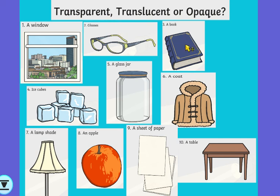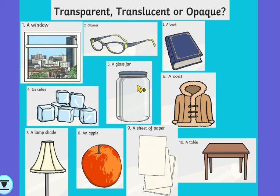A book — would I be able to see any light if I passed a torch the other side? No, I wouldn't, so that means a book is opaque. Ice cubes — now think about a frozen ice cube. Would the light pass through it straight with no problems, or would it get separated off and not be as bright? That means ice cubes are translucent. A glass jar — well, as long as it's empty it is transparent. If there was jam in it, it would become translucent because the jam would stop us seeing through clearly.